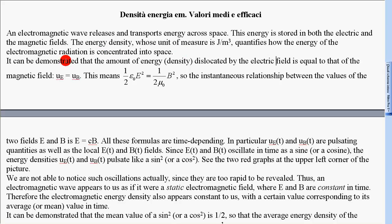It can be demonstrated that the amount of energy density dislocated by the electric field is equal to that of the magnetic field: UE equal to UB.